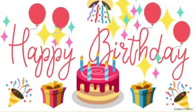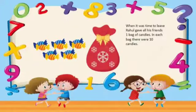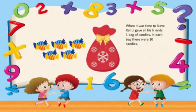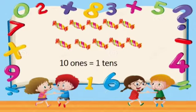Then they all celebrated the birthday party! When it was time to leave, Rahul gave all his friends one bag of candies. In each bag there were 10 candies. 10 ones equals 1 ten. It is a group of 10 — we call it only 1 ten.